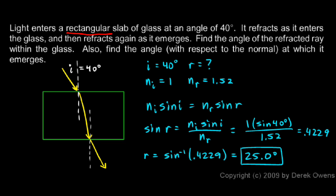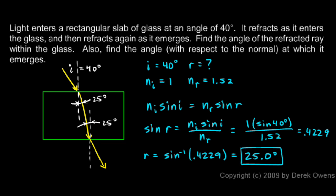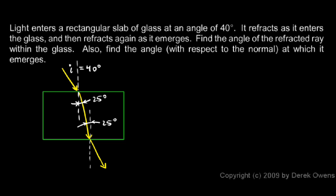We also need a bit of geometry. Since it's a rectangular slab of glass, one side is parallel to the other. Two lines perpendicular to two parallel lines are also parallel, so these normals are parallel to each other. That means if we have an angle of 25 degrees at the first refraction, this angle is also 25 degrees at the second surface. So our 25 degree angle of refraction for the first refraction becomes the 25 degree angle of incidence for the second refraction.